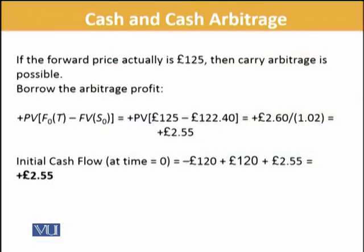If the forward price actually is 125 — if the forward market is at 125 — this means that arbitrage is an opportunity. Investors will be very interested in this particular structure. We will borrow the money and lock it in such a structure that we can gain from it. The difference is 125 minus 122.4.